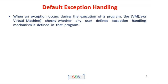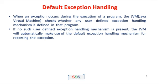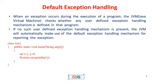Regarding default exception handling: when an exception occurs during the execution of the program, the JVM checks whether any user-defined exception handling mechanism is defined in that program or not. If no such user-defined exception handling mechanism is present, the JVM will automatically make use of the default exception handling mechanism for reporting the exception.